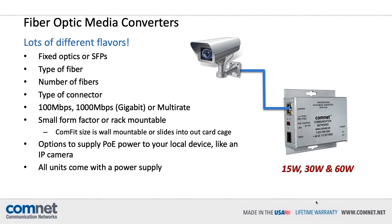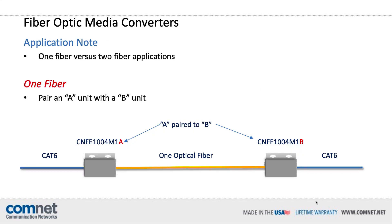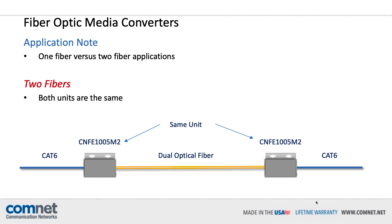And of course, all units ship with a power supply. One application note to consider with fiber optic media converters is pairing appropriate units. When using just one fiber between the transmitter and the receiver, you should pair an A unit with a B unit — the model number will tell you which it is. When you are using duplex optical fiber between transmitter and receiver, both units are the same model number.